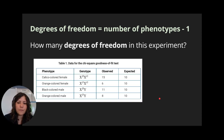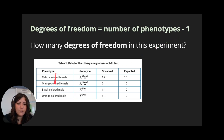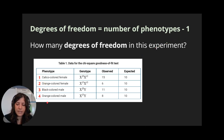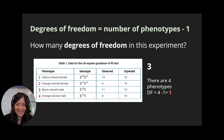In this experiment, how many degrees of freedom are there? Degrees of freedom is the number of phenotypes minus one. In this case we actually have four phenotypes — one, two, three, four — so our degrees of freedom is going to be three, because four phenotypes minus one equals three.